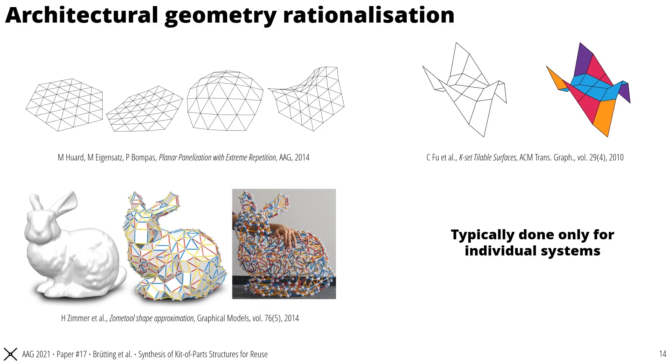At the same time, there exists very sophisticated architectural geometry rationalization methods to design freeform systems with repetitive elements. For example, meshes that contain only sets of identical triangles or quads. Other methods approximate freeform shapes with a prescribed set of identical bars and joints. However, all these methods typically only consider the rationalization of individual systems, and they don't care about the potential to reuse parts among different structures and for multiple service cycles.